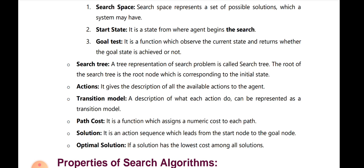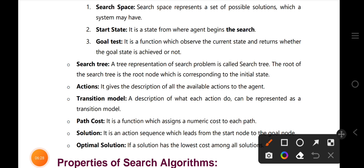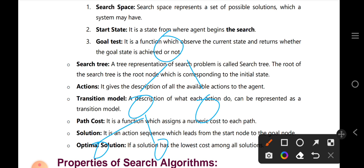Path cost is a function which assigns a numeric cost to each path. If we go to the next step, we can change a node. For example, we can change this path. This is A, B, C, D, E. We can go from A to D — that is the best path.